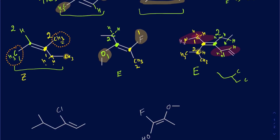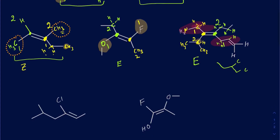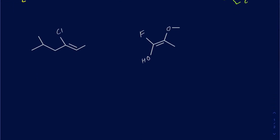Regarding the other double bond: if one of the carbons in a double bond has the same atoms or same group of atoms on both sides, it cannot be any form of cis/trans or E/Z. Cis/trans and E/Z only apply when the double-bonded carbon has two different groups. If both groups are the same, there is no E/Z isomerism for that double bond.